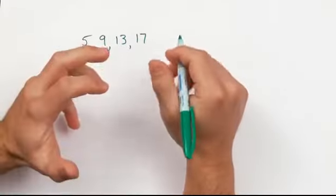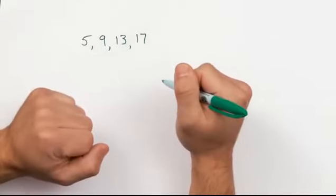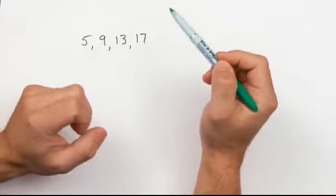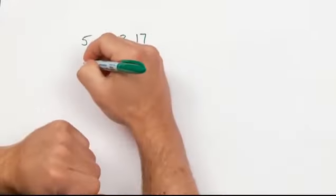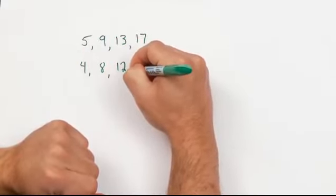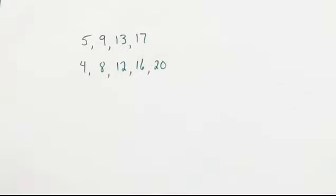Since the pattern goes up by 4 each time, it might be useful to compare the terms to the multiples of 4. Are the terms multiples of 4? No. The multiples of 4 are 4, 8, 12, 16, 20, on up.